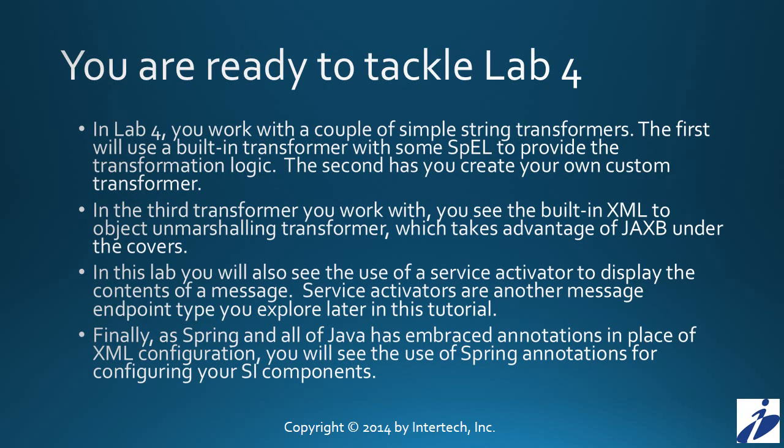You're now ready to tackle lab number four of our tutorial series. In this lab, you'll get a chance to work with several Spring Integration transformers. In the first case, working with a simple string transformer that uses SpEL to provide the logic about how you want the string payload to be transformed. In the second part of the lab, you'll actually create your own custom transformer — a PigLatin transformer — one that takes a string and converts that string to PigLatin. Finally, you'll get a chance to play with the built-in XML to object unmarshaling transformer, one that takes an XML message and converts that into Java object form.